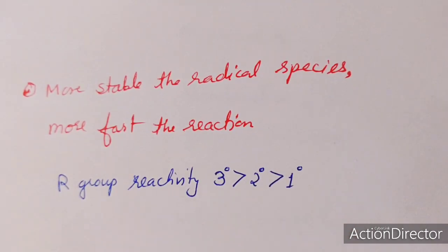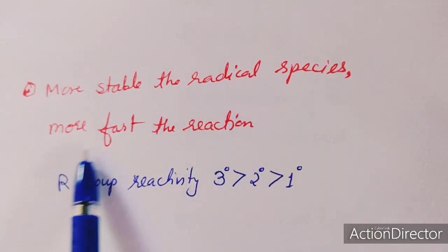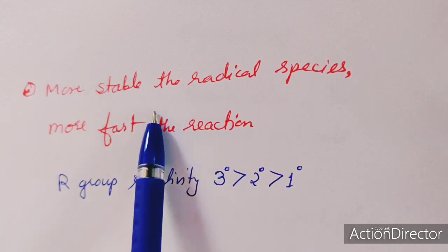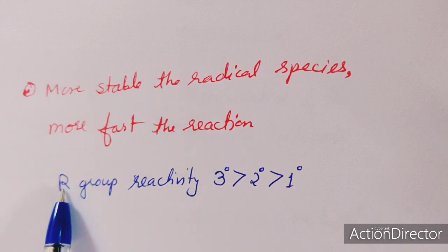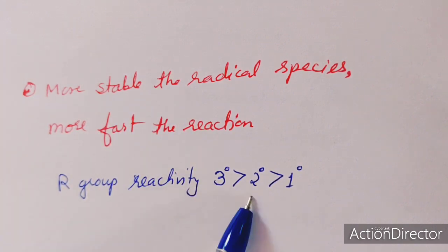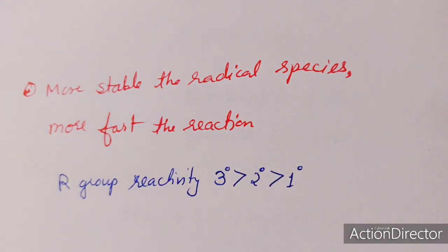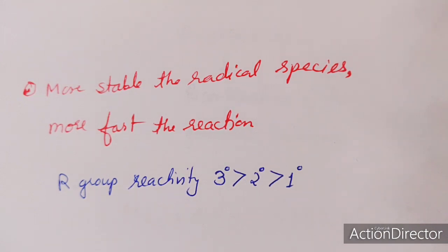The second factor is the alkyl halide: the more stable the radical species, the faster the reaction. The species will form only when it is stable, so the reactivity order is: tertiary alkyl halide > secondary alkyl halide > primary alkyl halide (least reactive) in this non-chain mechanism. This mechanism depends on the stability of the R radical and the electron sufficiency of the metal atom.